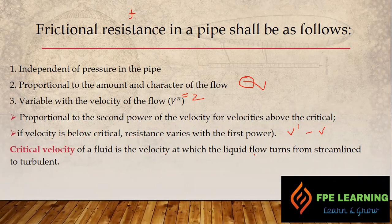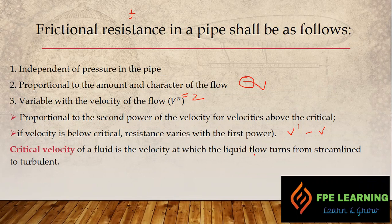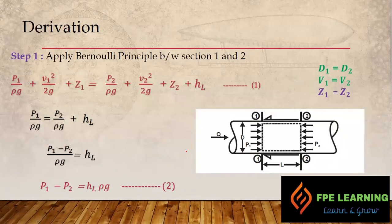Remember: frictional resistance doesn't depend on pressure, but it does depend on flow and velocity. The higher the flow or velocity in a pipe, the more frictional resistance we get. We'll discuss that further in another video — the links are in the description box. Now let's begin Step 1 of the four-step derivation.